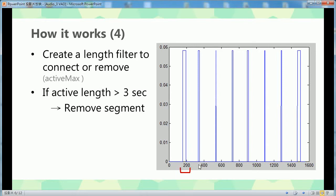So you can see another step is use a filter to connect or remove. Like if the time is more than 3 seconds, I remove this part because it's not my command. And if it's too small, it's like only half a second, it's too short, so I can set that as a noise and I can remove it.